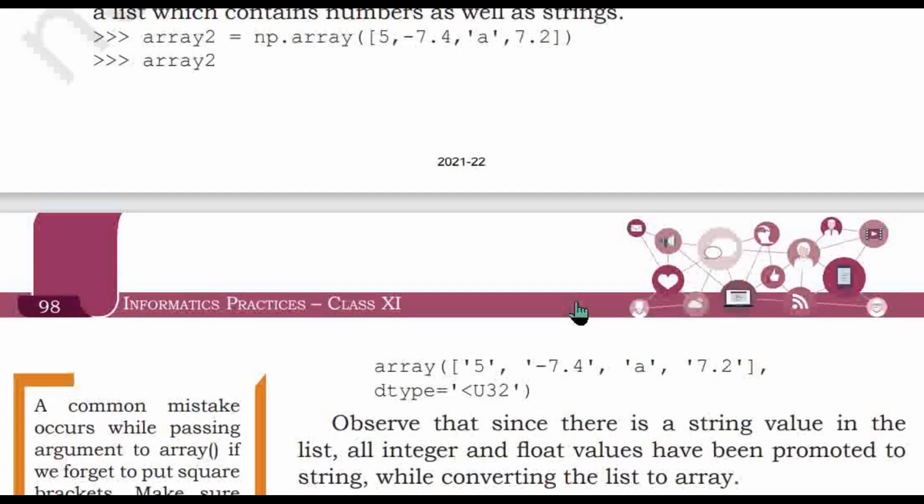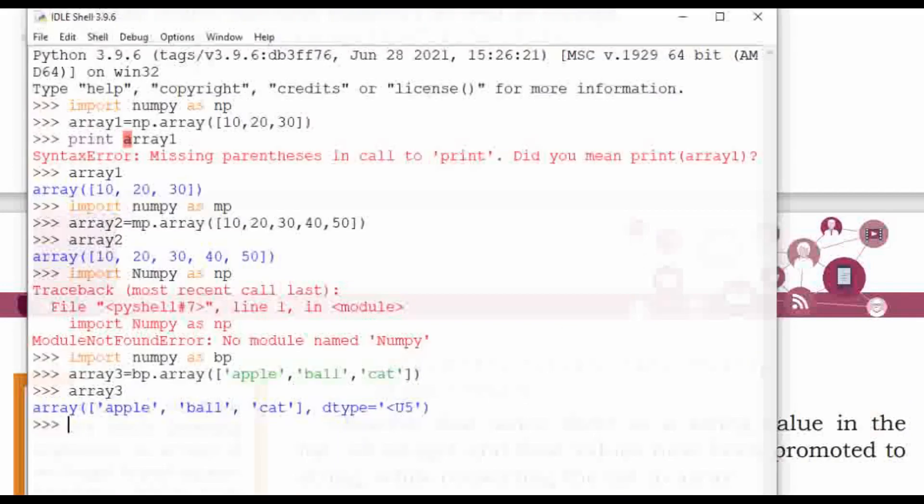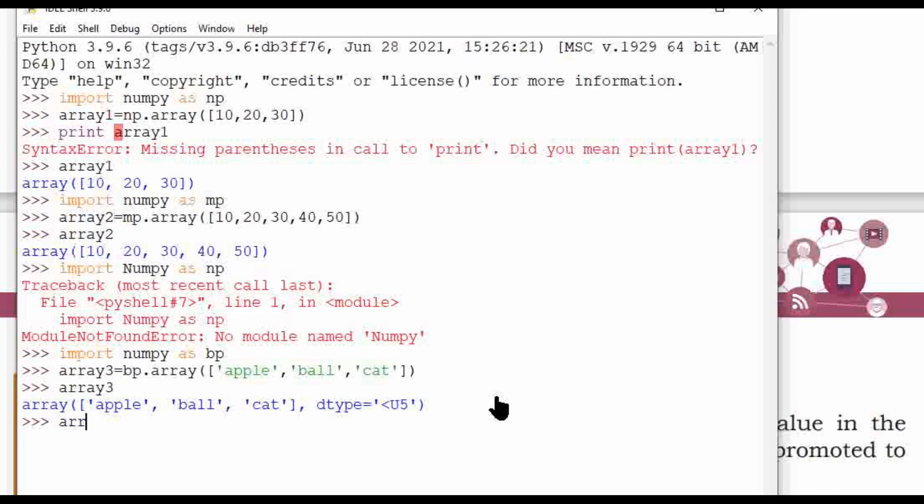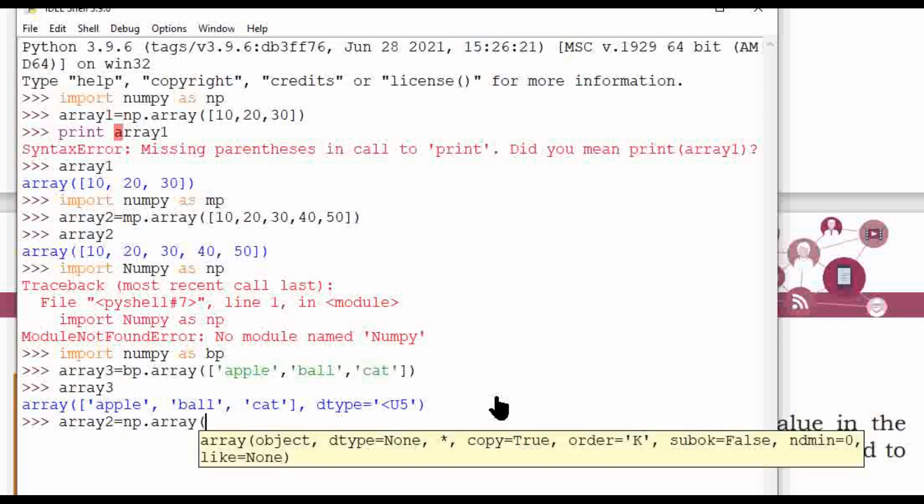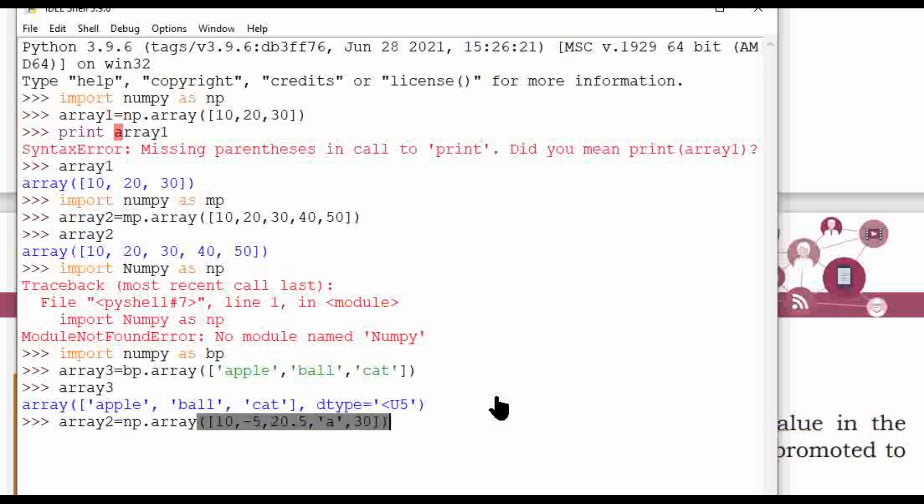Let's do practical for that for array2. Array2 equals np.array, and this is list with some numbers: 10, -5, 2.4, 20.5, 'a' is a character, Peter. List is closed, no error. Now we print array2.